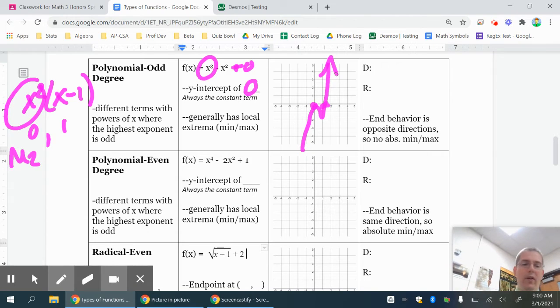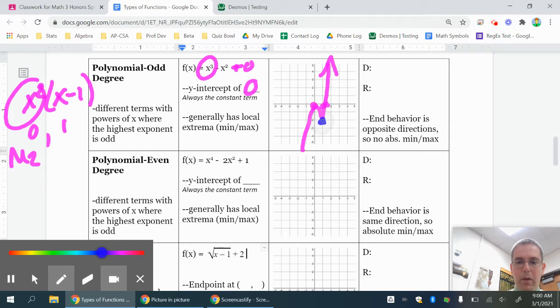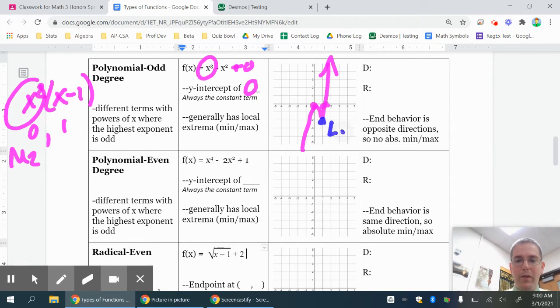So in this graph, I can tell I have a local minimum there. By local minimum, I mean it's not the minimum point in the entire graph, but it's the minimum point of that little valley. And then right here, I have a local maximum at zero, zero, because with that multiplicity of two, it was not only a zero, it was also a turning point. So that means it's the maximum point on that graph.